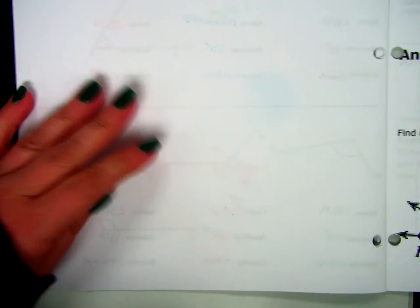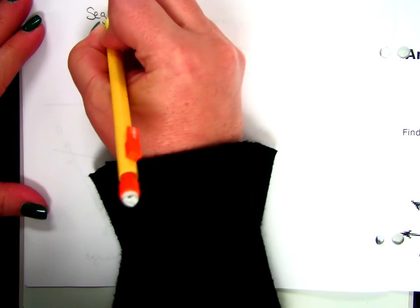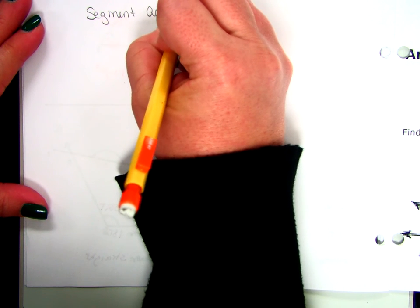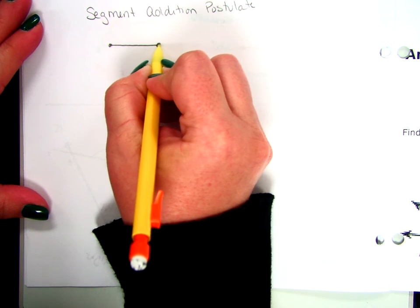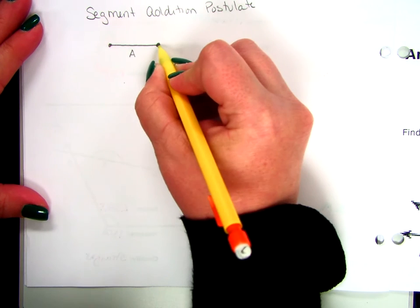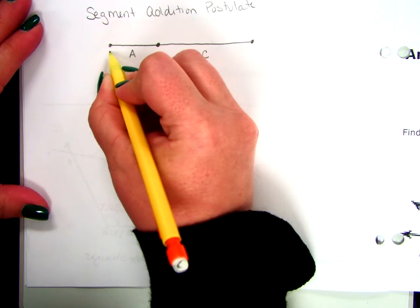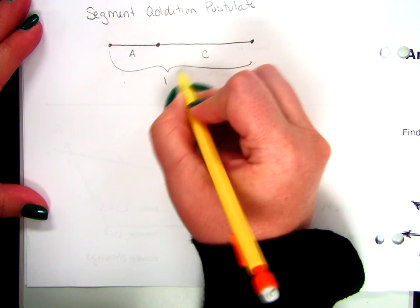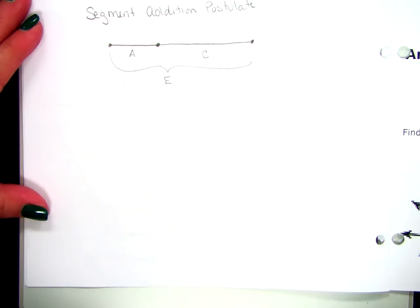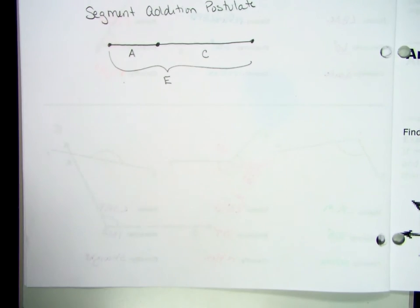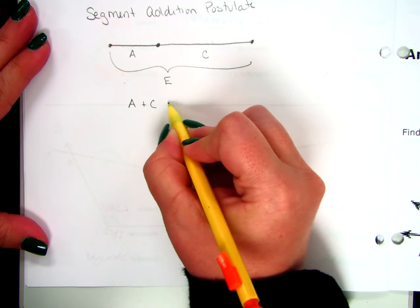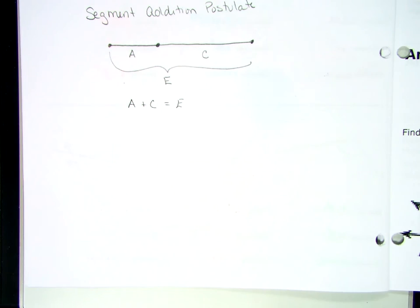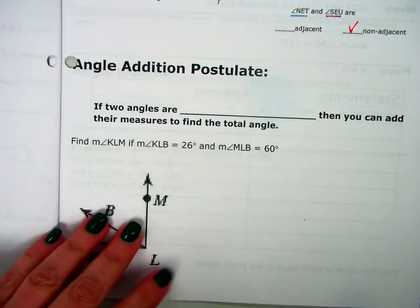Next thing we're going to do is we're going to look at the angle addition postulate. I'm going to come over here to my little blank side and I'm just going to review something real quick. Remember we did the segment addition postulate. And it said if I have a segment that has a length and it's attached to another segment that has a length and it makes a new total segment. The segment addition postulate says I can take the left side of that segment plus the right side of that segment and it's going to equal the whole segment.